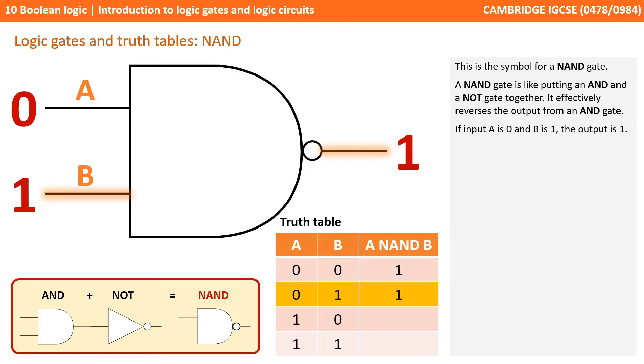If the input A is 0 and B is 1, the output is 1. If the input A is 1 and B is 0, then the output is 1. And if the input A is 1 and B is 1, then the output is 0.